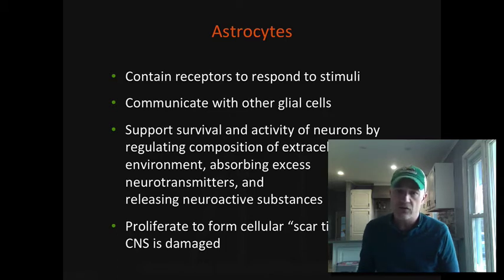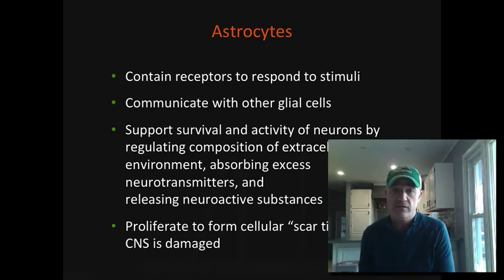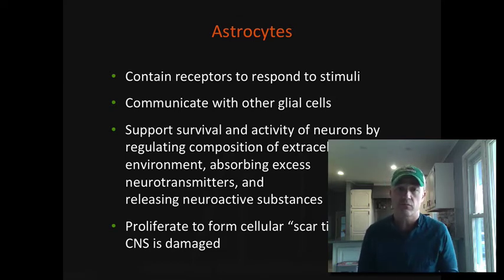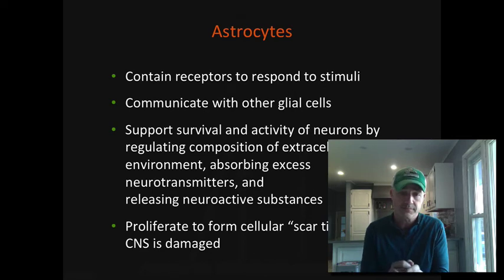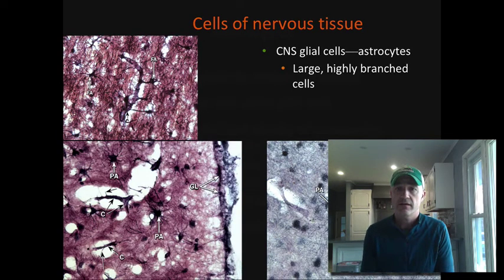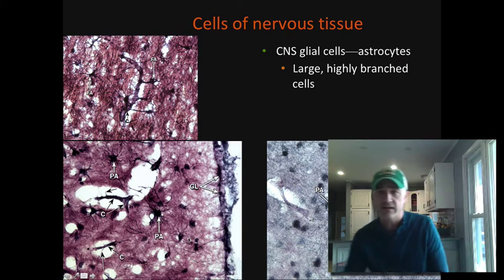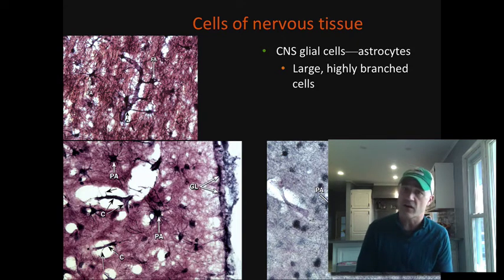Astrocytes can respond to different stimuli, but they do not send any action potentials or electrical potentials at all. What they're doing is removing neurotransmitters from the synapses, helping provide nutrients, and maintaining the environment for neurons. If there's damage to neurons and those neurons die off, astrocytes will proliferate in that place and make what is essentially nervous scar tissue, filling in where the neurons would have been. Under the microscope you can see the centralized body with all these projections going out — that's where they get their name. Astrocyte basically means star cell.